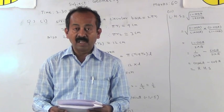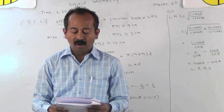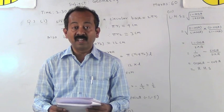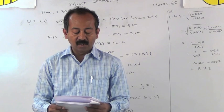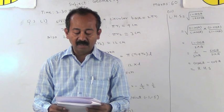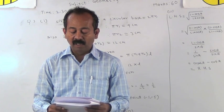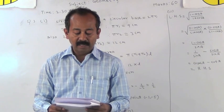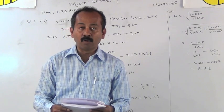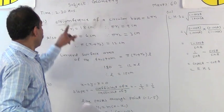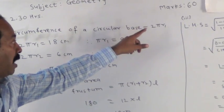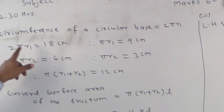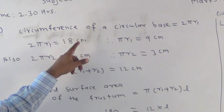First one, the curved surface area of the frustum of cone is 180 centimeter square and circumference of its circular bases are 18 centimeter and 6 centimeter respectively. So, circumference of a circular base is given by 2 pi r1. So, 2 pi r1 is 18 centimeter.